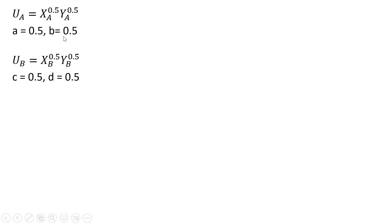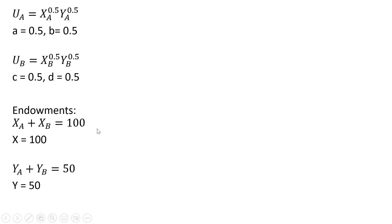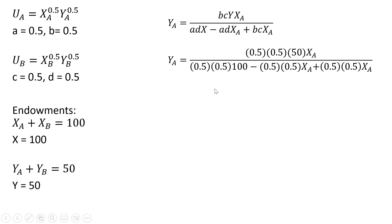First example: two consumers with Cobb-Douglas utility functions where A equals 0.5 and B equals 0.5 for consumer A, and C equals 0.5 and D equals 0.5 for consumer B. The total endowment for good X is 100 and for good Y is 50. Using our general solution and substituting all values — the exponents B, C, A, D, total endowment Y of 50, and total endowment X of 100 — we simplify: 0.5 times 0.5 times 50 gives 12.5, and 0.5 times 0.5 times 100 gives 25. The two terms in the denominator cancel, leaving the specific expression for the contract curve.